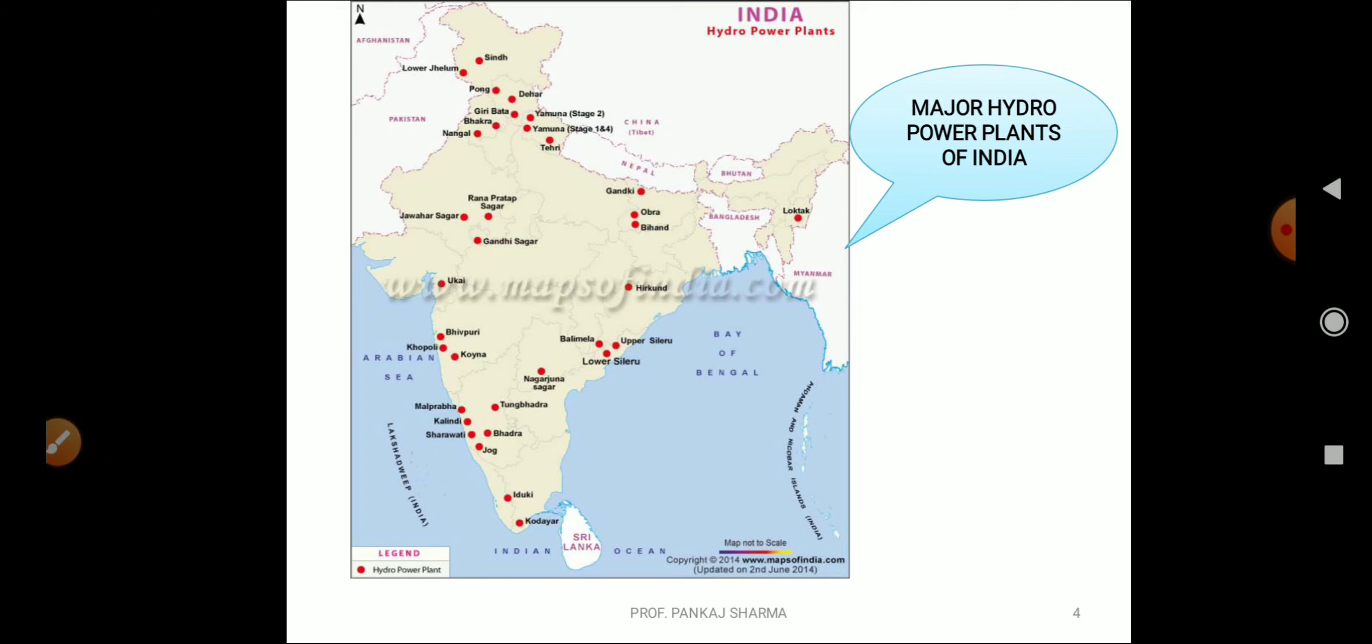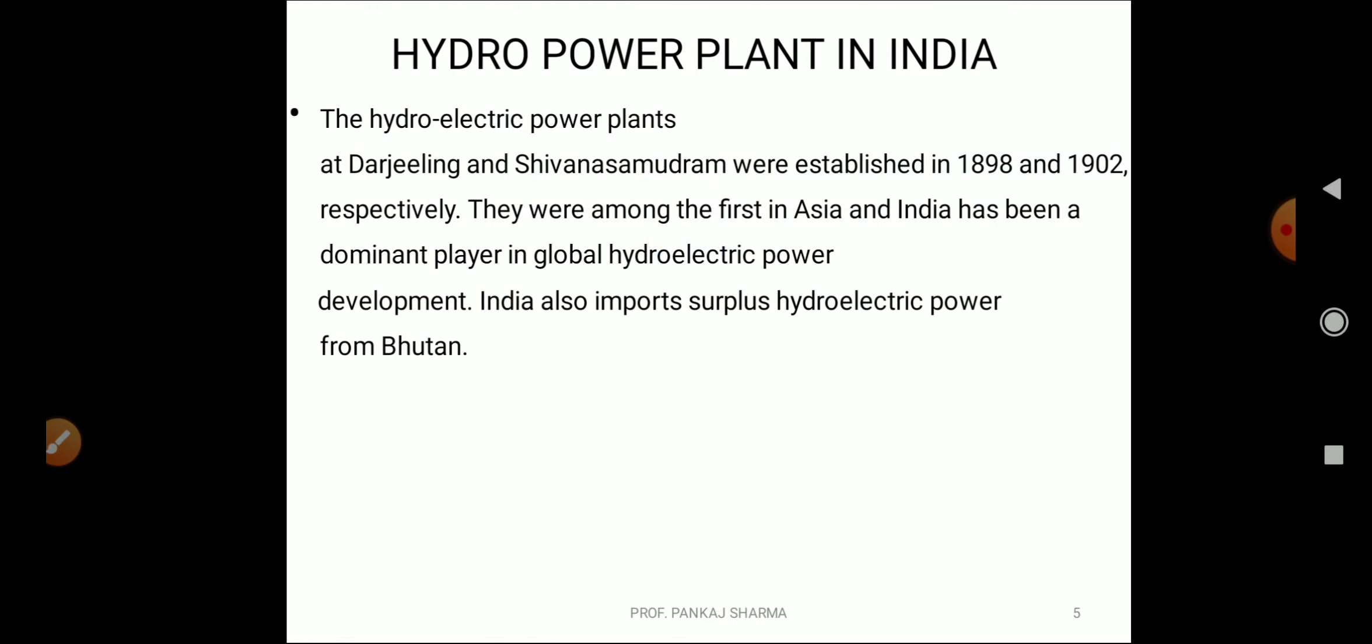In the next slide you can see the major hydropower plants of India. You can pause it and note down the important places in your state or neighborhood state. Hydropower plants at Darjeeling and Shivanasamudram were established in 1898 and 1902 respectively. They were among the first in Asia and India and has been a dominant player in global hydroelectric power. Kindly note this. India also imports surplus hydroelectric power from Bhutan. This is important question for objective point of view.